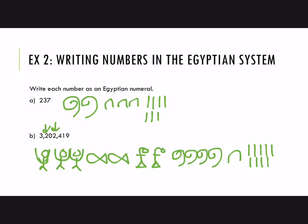You can probably see some advantages over the tally system — we certainly would not want to write three million-some tallies to represent that numeral. But you can also see a disadvantage compared to the numeration system we use: notice how many characters we had to use to write this number, and it's a bit difficult to write these characters — at least for us. Perhaps for the Egyptians it wouldn't have been that difficult.